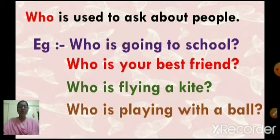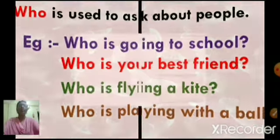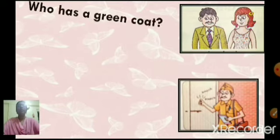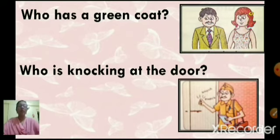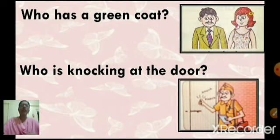So we will see more examples of who and how to answer the question in short. Now look at these pictures. Who has a green coat? Next one is, who is knocking at the door? Now look at the picture — who has a green coat?